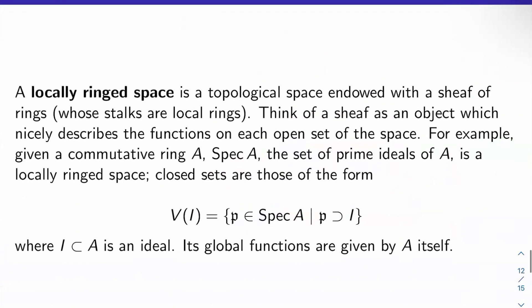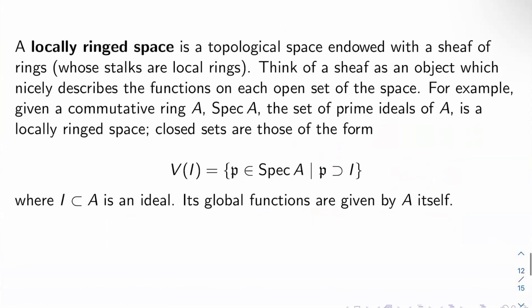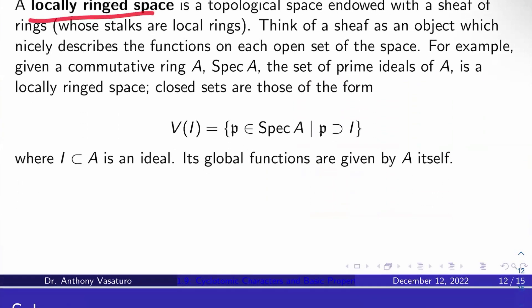The last thing we need to discuss is flatness of a Galois representation. For this, you really need to know your algebraic geometry. I'm not going to develop the theory extensively from scratch — I'll give a key definition here, and maybe later on the channel I'll do full courses on algebraic geometry. A locally ringed space is a topological space endowed with what we call a sheaf of rings, where the stalks are also local rings. You should think of a sheaf as an object that nicely describes all the functions on each open set of the topological space.